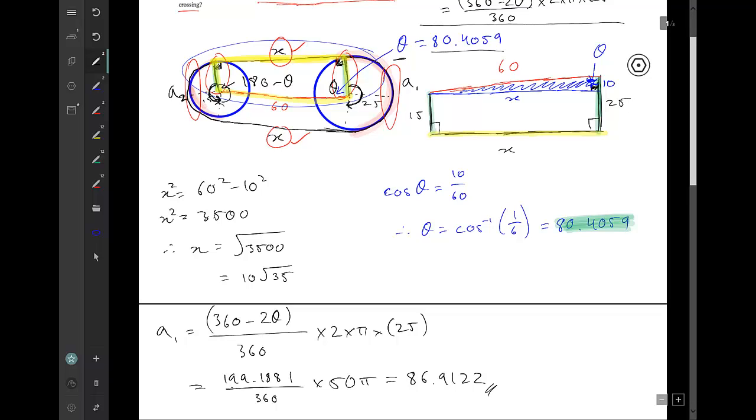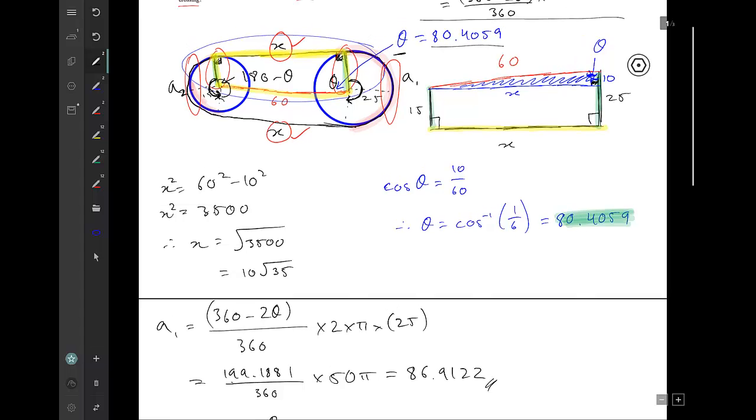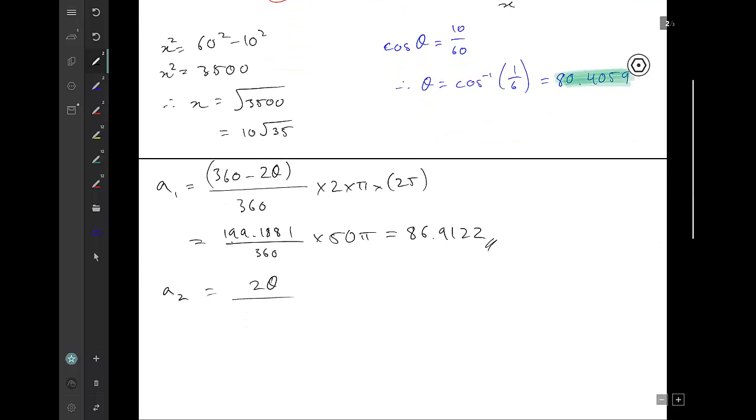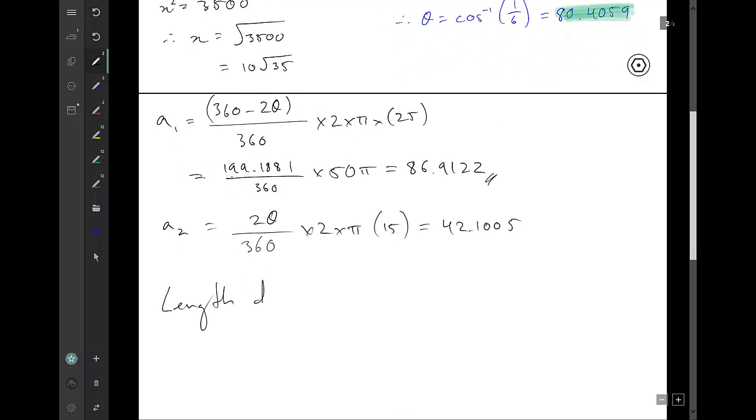So given that this angle here is 180 take away theta, these two together are going to be 360 take away 2 theta. In other words, this angle, the one we want for the second arc, is going to be exactly the complement of this angle. Given for a1 I had 360 minus 2 theta, for a2 I am just going to have 2 theta. I've got 2 theta on 360 times 2 times pi times 15, and I end up with 42.1005.